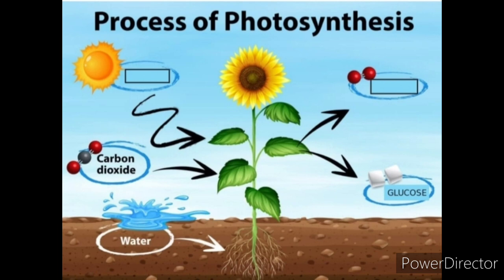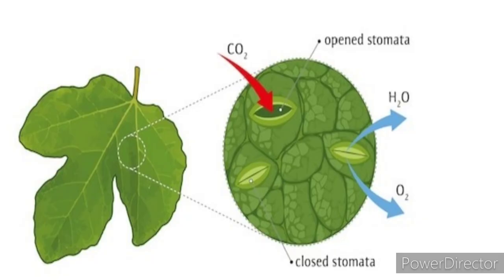Now, the absorption of carbon dioxide and releasing of oxygen takes place through minute pores that are present on the leaf surface. And these minute pores are known as stomata.